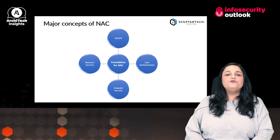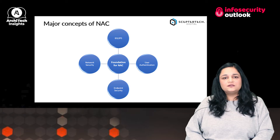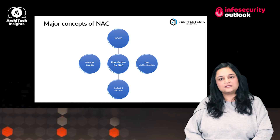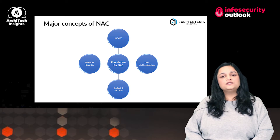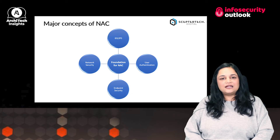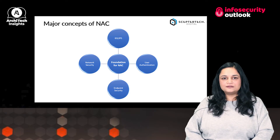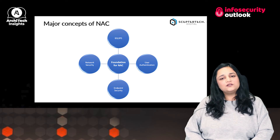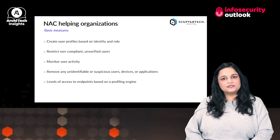There are four major concepts that act as a foundation for NAC. The first is IDS or IPS — Intrusion Detection Systems or Intrusion Prevention Systems — put into place to identify and contain breaches and attacks. The second is user authentication, which involves the correct identification and verification of users or devices attempting to access a network. The third is endpoint security — endpoints or devices need to remain secure once access has been granted, known as post-admission security. And finally, network security, which focuses on ensuring the security of the network environment.